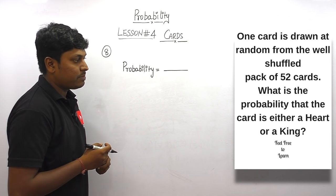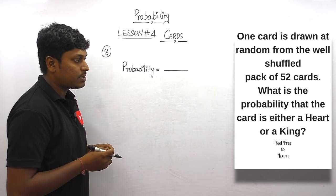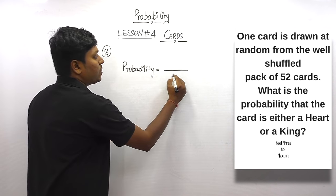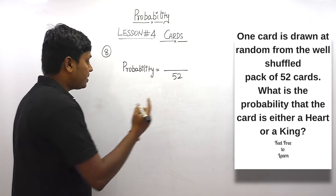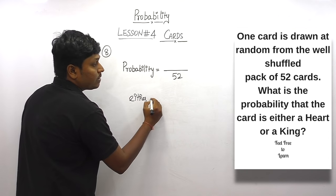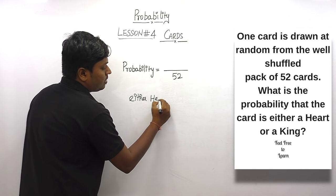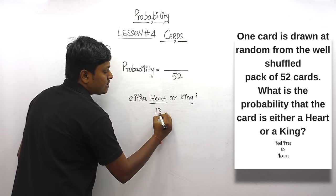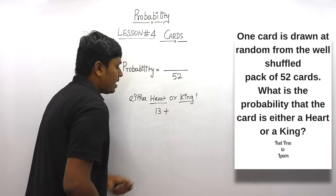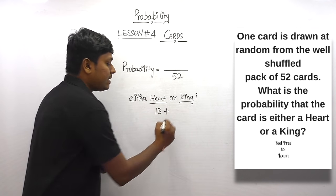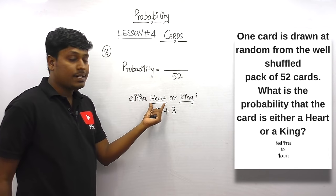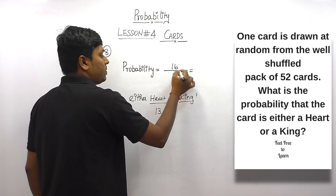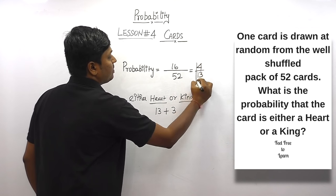Question number eight: one card is drawn at random from a well-shuffled pack of 52 cards. What is the probability that the card is either a heart or a king? Heart has 13 cards. There are 4 kings but one is already in heart, so remaining 3 kings. So 13 plus 3 = 16, divided by 52 = 4/13.